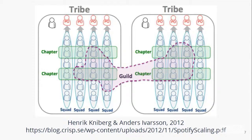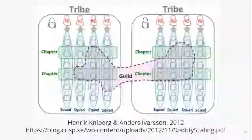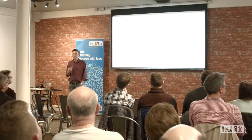This diagram was published in 2012 by two consultants who worked at a Swedish consultancy called Crisp. At the time they were working at Spotify to help them with lots of stuff about software delivery. Who's seen this diagram before? Maybe about half the people in the room.